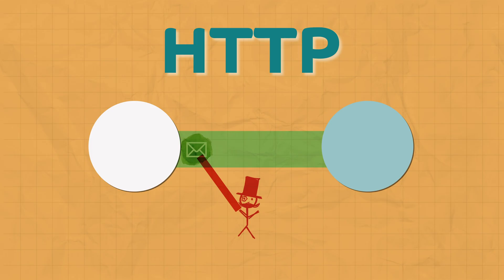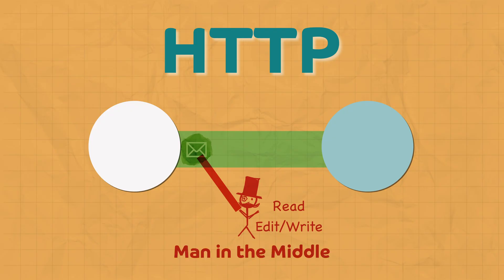A malicious actor can read or understand what client and server are talking about, or in some cases alter the communication between them. This is a breach of privacy and security. A malicious actor or third party intercepting communication between two other parties that is expected to be private is known as a man-in-the-middle attack — well known in the field of security and usually written as MITM attack.